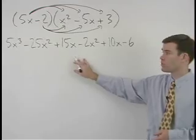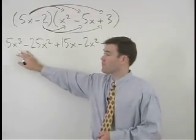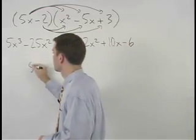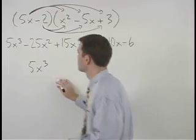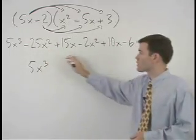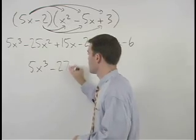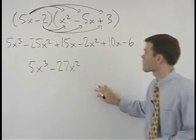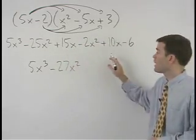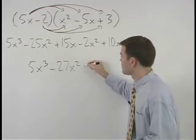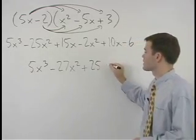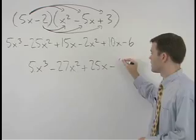Now we can combine like terms. So starting with 5x to the third, negative 25x squared minus 2x squared is negative 27x squared. Positive 15x plus 10x is positive 25x minus 6.